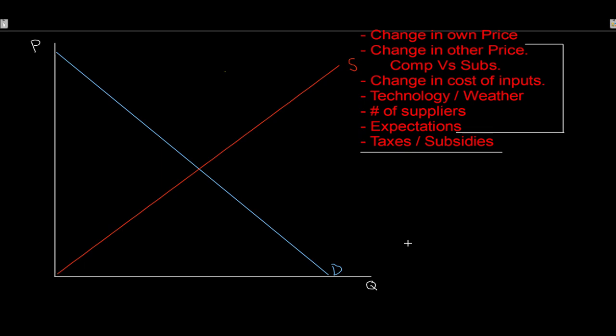As we approach a shock, one of the first things to look for is language in the question. Is there language saying 'producers,' 'the firm,' 'the business'? Those are good hints we're talking about supply. On the other side, is there language like 'consumer,' 'demand,' or 'purchaser'? That would put us in demand. First thing: look for language. Second thing: try to categorize the shock into one of the seven supply determinants or six demand determinants.